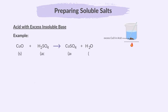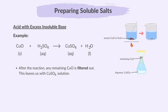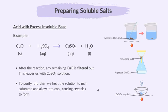For example, copper(II) oxide reacts with sulphuric acid to produce copper(II) sulphate and water. After the reaction, any remaining copper(II) oxide is filtered out, leaving us with copper(II) sulphate solution — the salt we are preparing. To purify it further, we heat the solution to make it saturated and allow it to cool, causing crystals of copper(II) sulphate to form.